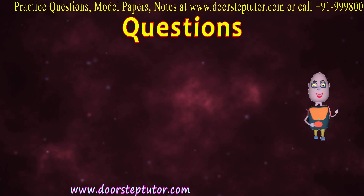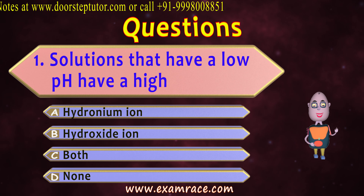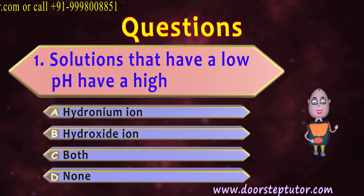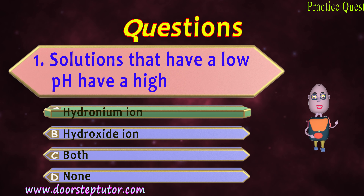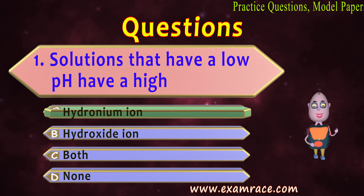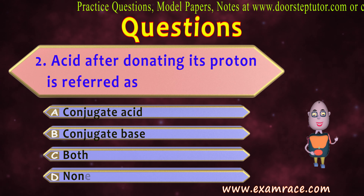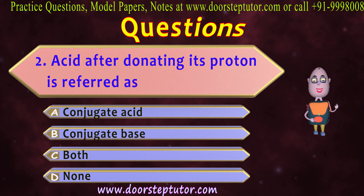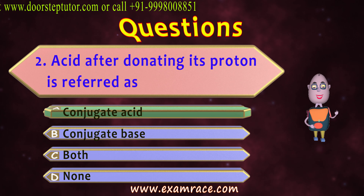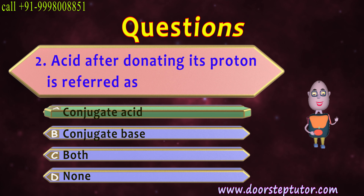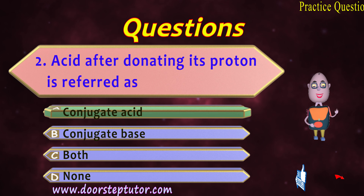Now let's move to the objective questions. First: solutions that have a low pH have a high — hydronium ion, hydroxide ion, both, or none? We've seen that low pH means a high concentration of hydronium ions, indicating a more acidic solution. Second question: an acid after donating its proton is referred to as what? According to Bronsted-Lowry theory, it is referred to as a conjugate base. These were the questions related to this topic. Thank you so much for watching this lesson.